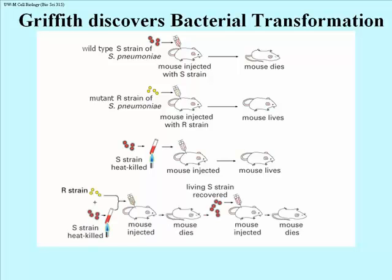The R strain and the heat-killed S strain were then injected together. Griffith reasoned that perhaps something from the R strain would combine with something from the heat-killed virulent strain to perhaps confer immunity. Surprisingly, though either alone had no effect on the mice, when he injected both together, the mouse died within a day or so. What's more, the blood of the dead mouse contained nothing but living S strain — you could plate the blood on an agar plate and grow smooth colony virulent cells, which could re-inject into a fresh mouse and kill it within a day.